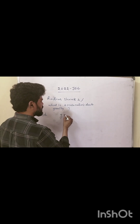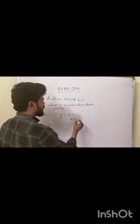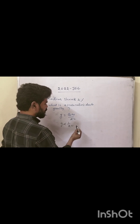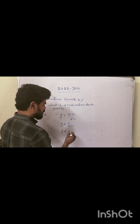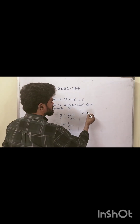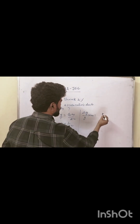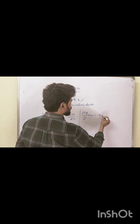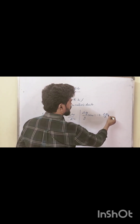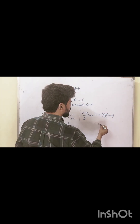We know that g is equal to GM by r squared, so g is proportional to 1 by r squared, or g proportional to r to the power minus 2. Now, the percentage change formula gives us: delta g by g into 100 equals minus 2 into delta r by r into 100.